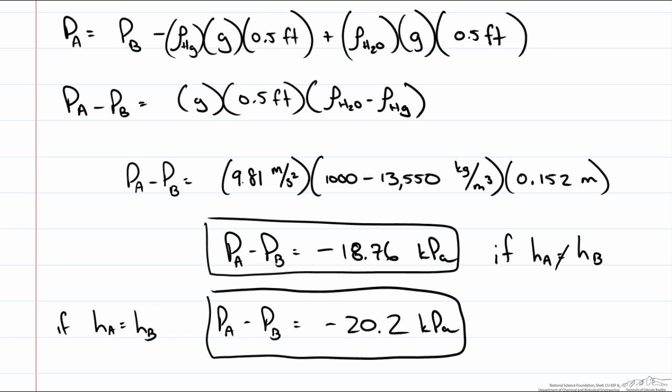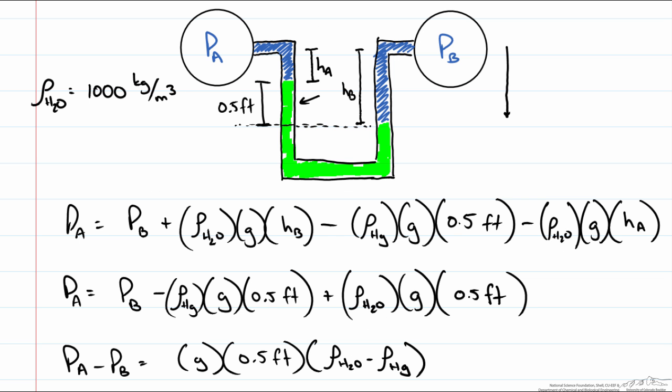Now what hopefully is ringing clearly is that this first one is not true. This is only if tube A and tube B are at the same height. Because again, we used the relationship that HB minus HA was the height of our mercury column. Now cases where that is not true, we would have to know some information about the height of A or the height of B to calculate this.